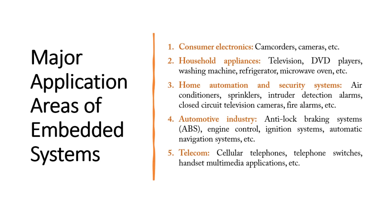Coming to the automotive industry — as mentioned in the previous video, anti-lock braking system (ABS) is one of the major applications. Then you have engine controlling devices and ignition systems. Nowadays vehicles have power ignition switches — you don't need a key to drive a car anymore. You also have automatic navigation systems fitted into your vehicle, with smartphones connected via GPS or other technologies. All these are application areas of embedded systems.